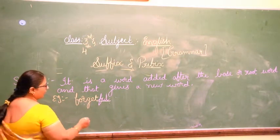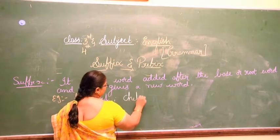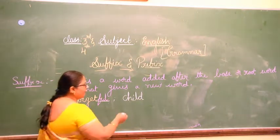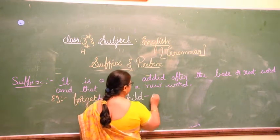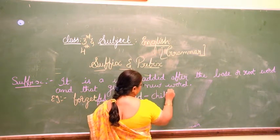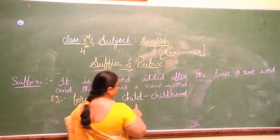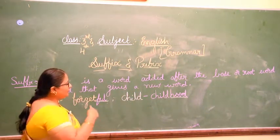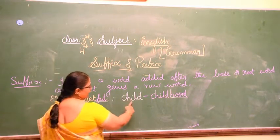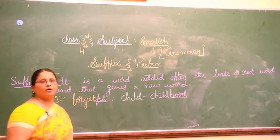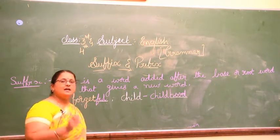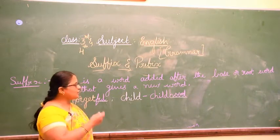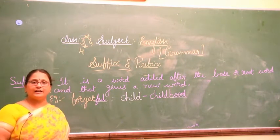Suppose I have a word called 'child'. C-H-I-L-D. This is the base word. What I will do is add 'hood' here. Child + hood becomes 'childhood'. So this type of added word we call a suffix. Like this, we also have 'neighborhood'. We have different types of suffixes.